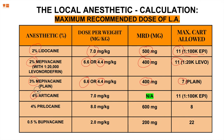4% articaine is 7 milligrams per kilogram — similar to lidocaine — with no specific milligram cap and a maximum of 11 cartridges. 4% prilocaine is 8 milligrams per kilogram, capped at 600 milligrams, with a maximum of 8 cartridges — notice the pattern: 8 mg/kg and 8 cartridges. Finally, 0.5% bupivacaine is 2 milligrams per kilogram, maximum 200 milligrams, and 22 cartridges.